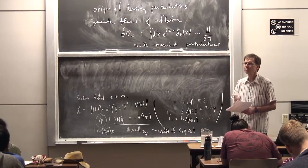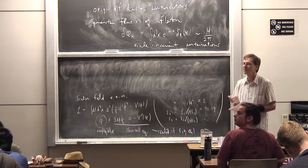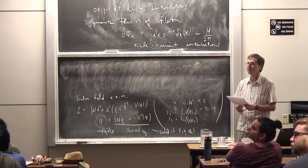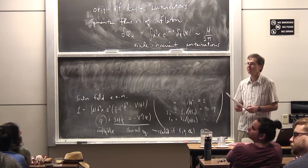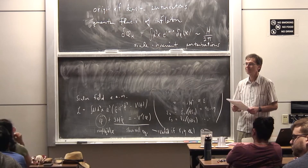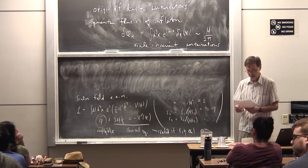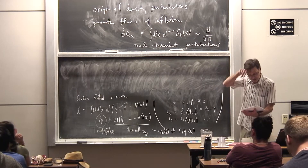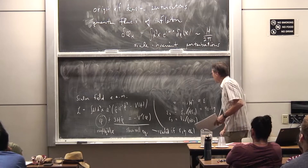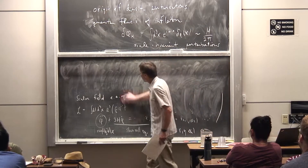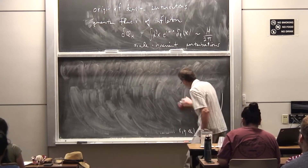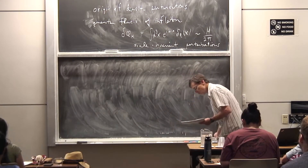The observable quantity is the scalar power spectrum P_S — the Fourier transform of the real-space curvature correlation function — which goes as H to the fourth over phi-dot squared. People parameterize this as an overall normalization A times (k/k_*)^(n_s - 1), where n_s equals 1 is exactly scale-invariant. From slow roll inflation we get n_s close to 1, and the deviations show up in the microwave background fluctuations. This was first observed by the COBE experiment in 1992.